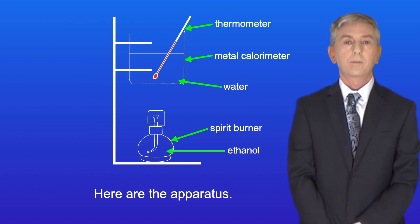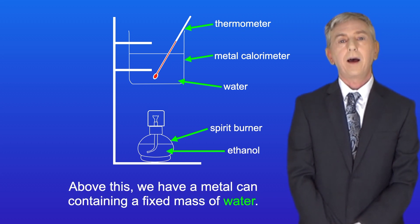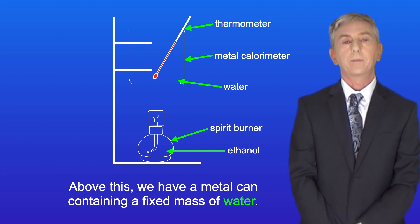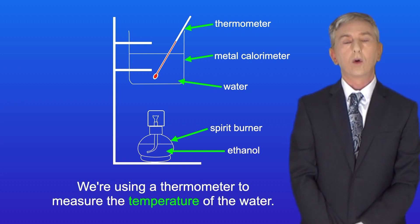Here are the apparatus. We've got ethanol and a spirit burner. Above this we've got a metal can containing a fixed mass of water. Scientists call this metal can a calorimeter. And we're using a thermometer to measure the temperature of the water.